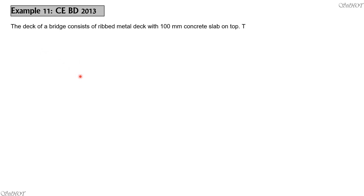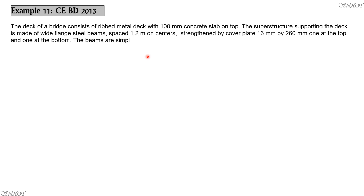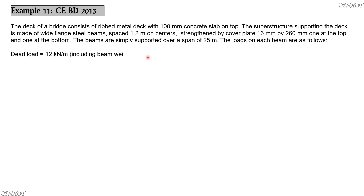Here is the solution to Example 11. This came up in the board exam 2013. The deck of a bridge consists of a corrugated metal deck with 100 mm concrete slab on top. The superstructure supporting the deck is made of wide-flanged steel beams spaced 1.2 meters on centers, strengthened by cover plates 16 mm by 260 mm, one at the top and one at the bottom. The beams are simply supported over a span of 25 meters.